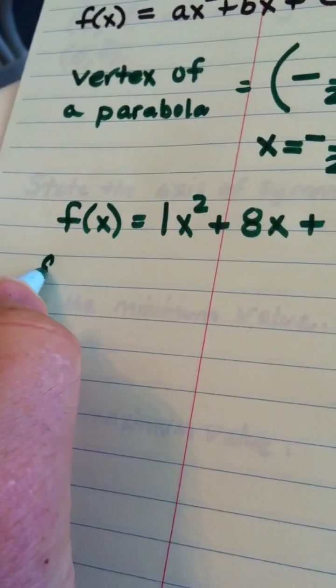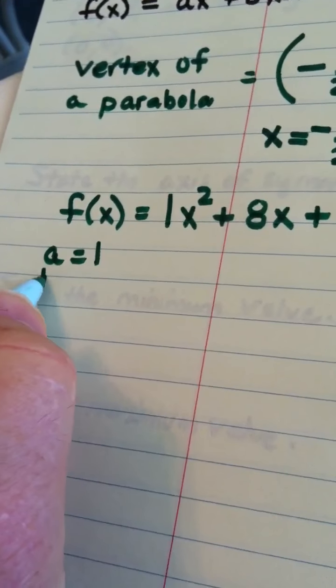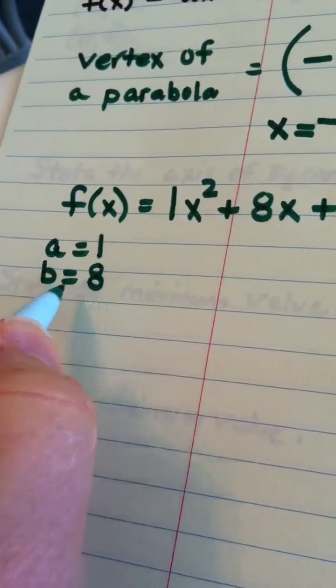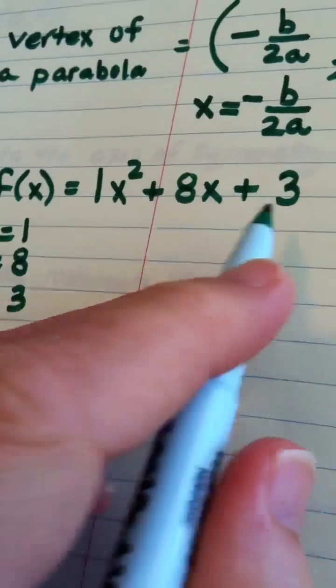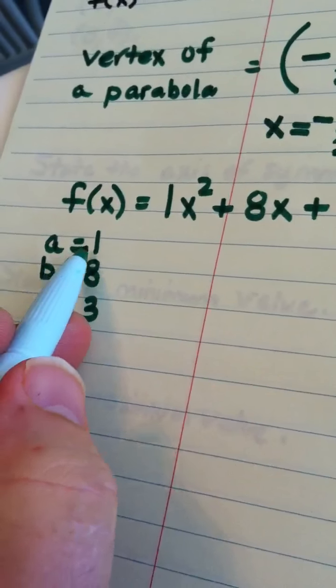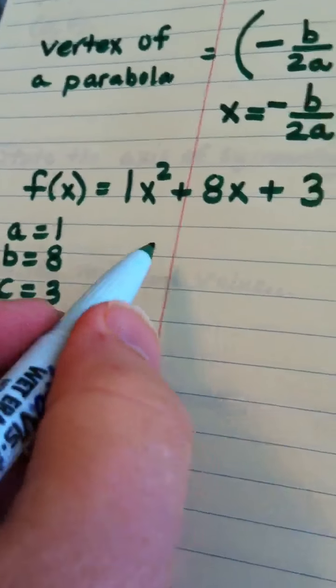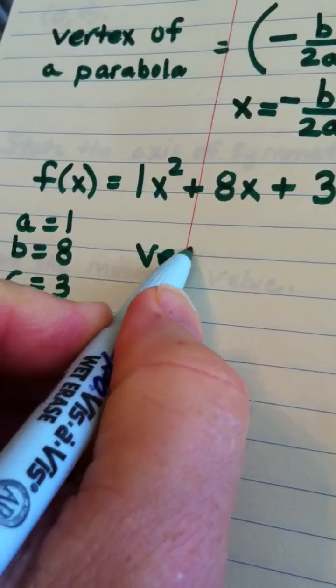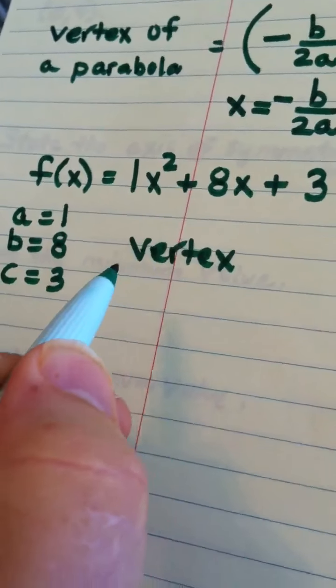A is 1, b is 8, and c is 3. Now, for the vertex formula, you don't need the c. You really only need the a and the b. But if I want to find the vertex of the parabola by hand, here's what I remember.